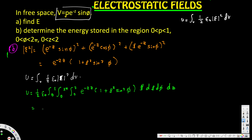After doing all the integration and simplifying, you end up with negative ¼ε₀ times (5/4)e^(-4) minus 1, which gives us 0.96ε₀. This is the energy stored in the given region. That's how we do these kinds of problems — I hope this helps, thanks for watching.